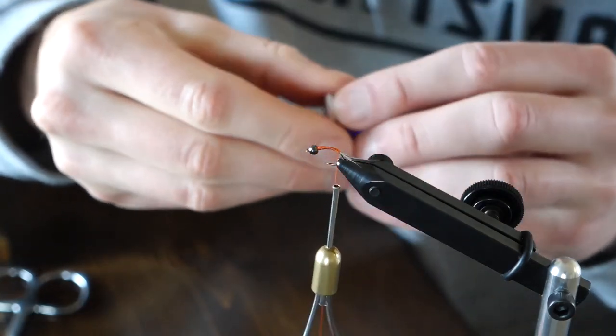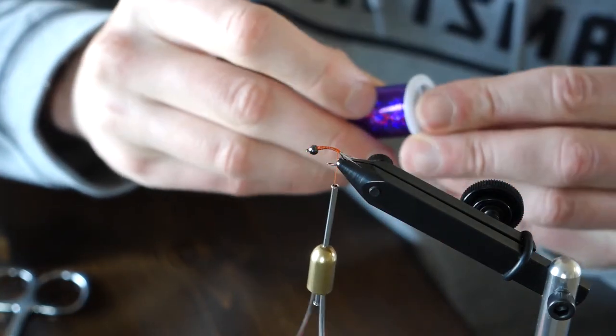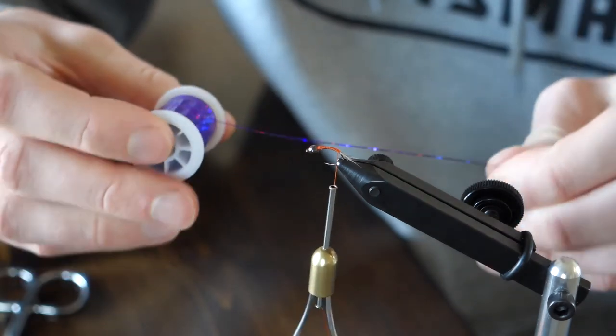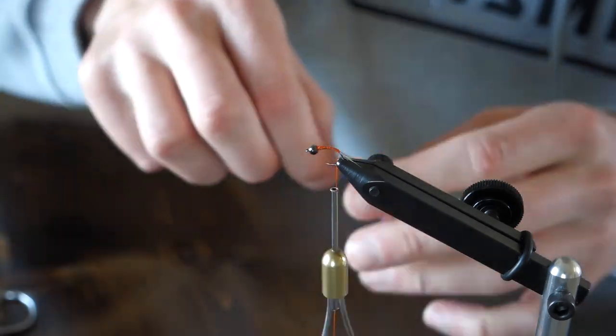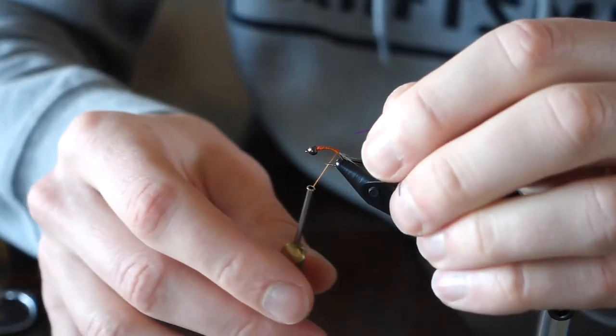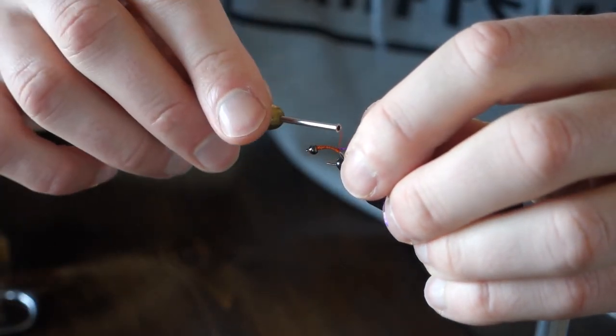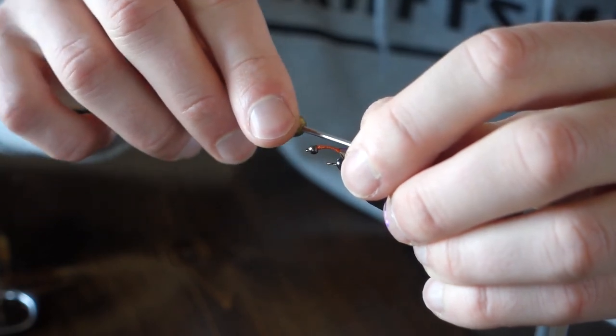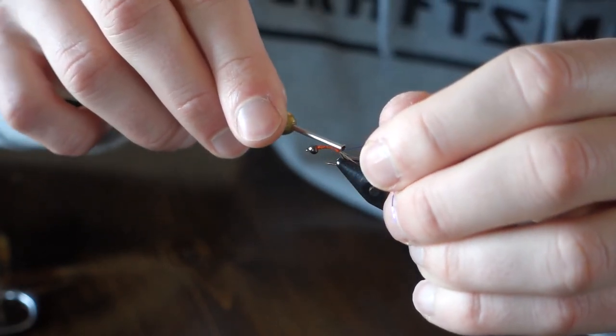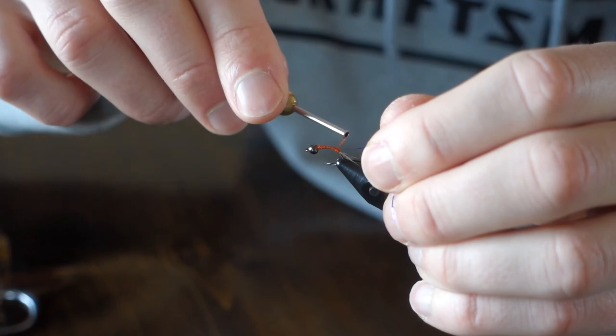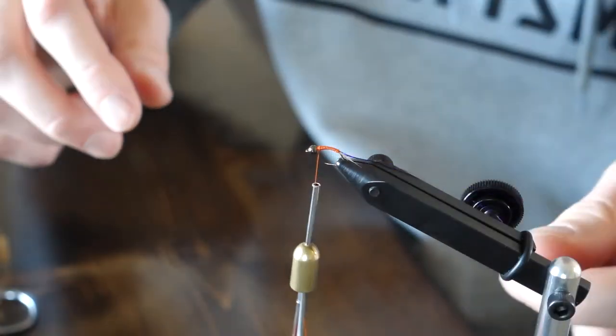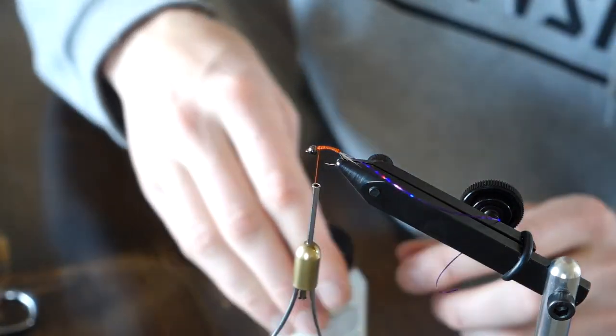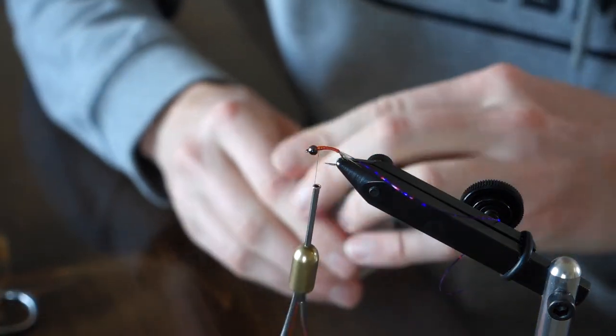So now we're tying in our body. This is going to be purple holographic tinsel. And this is really what makes this fly shine. I'm going to tie it in right in front of the tail. And after I've tied this in, to help make the wrapping easier and to add a lot of durability to this fly, I'm going to coat the back of the body with head cement. You could use Zap-a-Gap or any super glue of your choice. I'm just using a semi-gloss head cement.